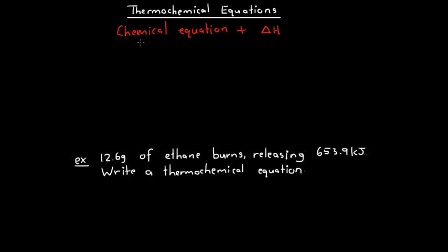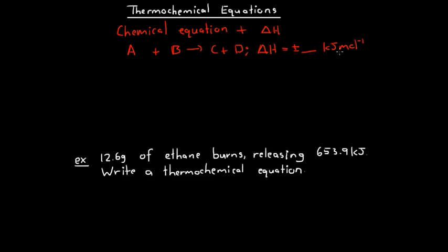If we have a chemical equation where A reacts with B to produce products C and D, then this is the chemical equation for this reaction. The thermochemical equation is written by simply adding on that the change in enthalpy for this reaction is a certain number of kilojoules per mole. That kilojoules per mole means that if the coefficients in this reaction represent the number of moles of each substance, then that is the number of kilojoules that will be released.